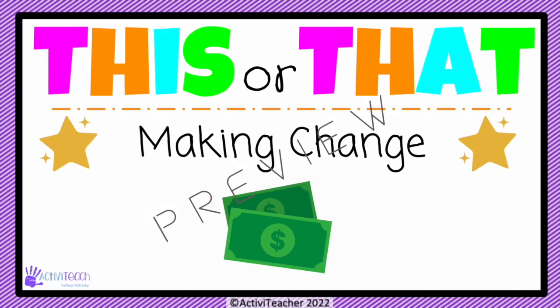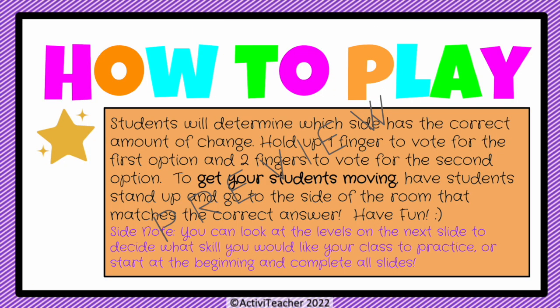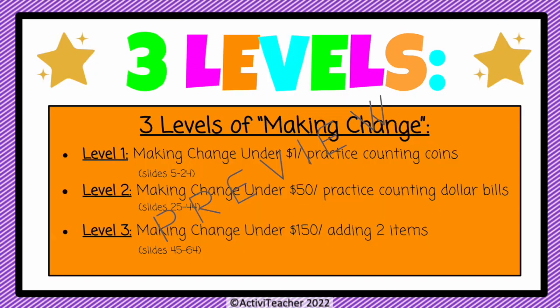The next activity is a 'This or That' making change game. Students determine which side has the correct amount of change. They can hold up one finger to vote for the first option or two fingers for the second option. My favorite way to play is to have students stand up and move to the side of the room that matches the correct answer.